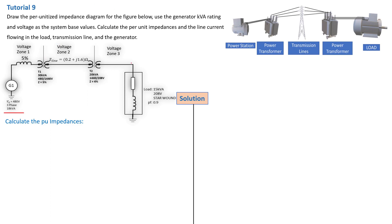Drawing the per unitized impedance and calculating the per unit impedance is exactly the same thing. We need to convert these elements into per unit impedances. The 5% here is the old per unit of the generator — that is one element. Then we have transformer T1, the transmission line, transformer T2, and a star-wound load. After calculating the per unit impedances, we need to calculate the line current flowing in the load, the current on the transmission line, and the current flowing from the generator. These three currents are not exactly the same.